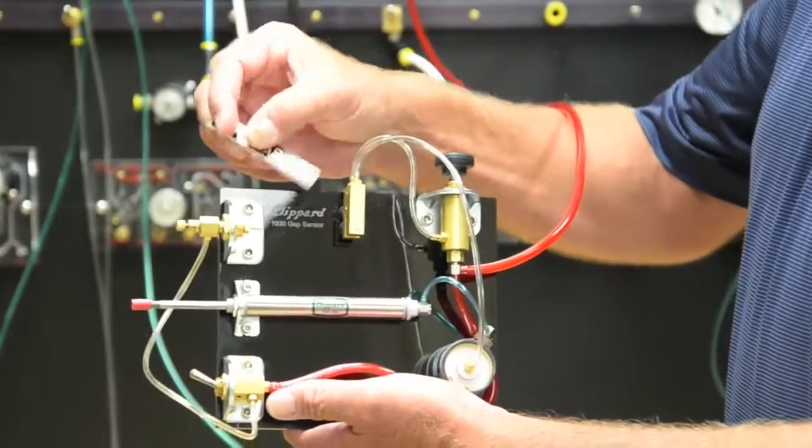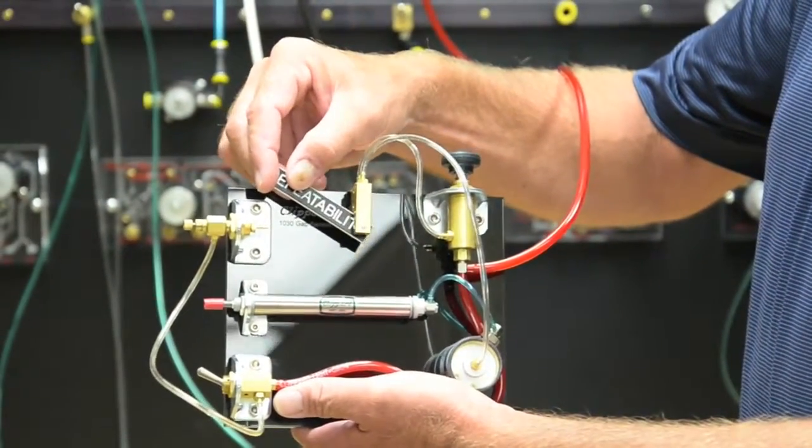When we put something in the way of the gap, that is when we cancel the output on the low pressure control valve.